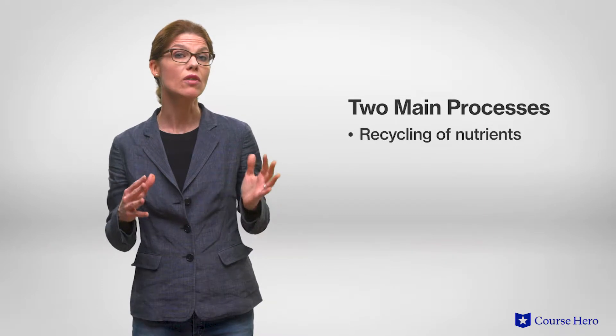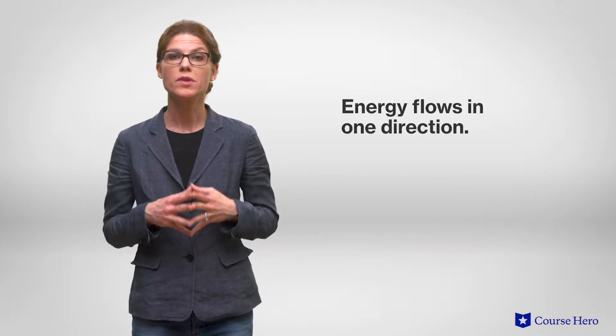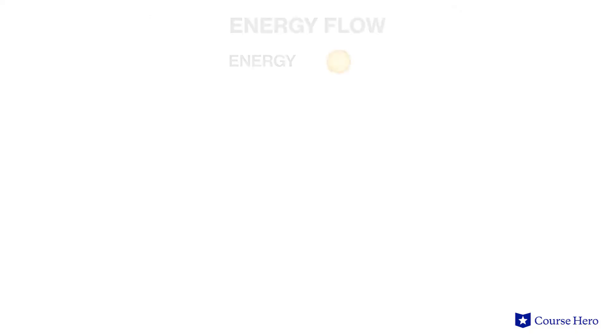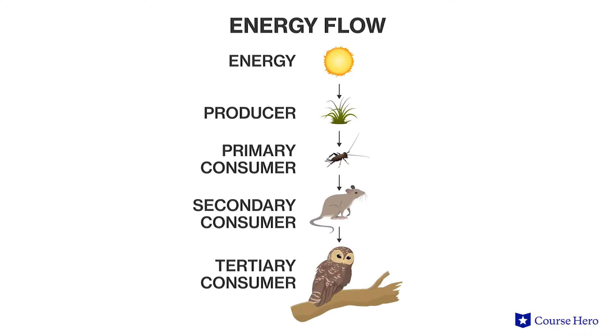The dynamics of any ecosystem depend on two main processes: the recycling of nutrients and the flow of energy through the ecosystem. With energy flow, we observe energy going in one direction. The sun continuously provides the energy that is captured by producers, which are then consumed by consumers. Eventually, all the energy captured from the sun is lost as heat, which is why we need a continuous supply of light energy.